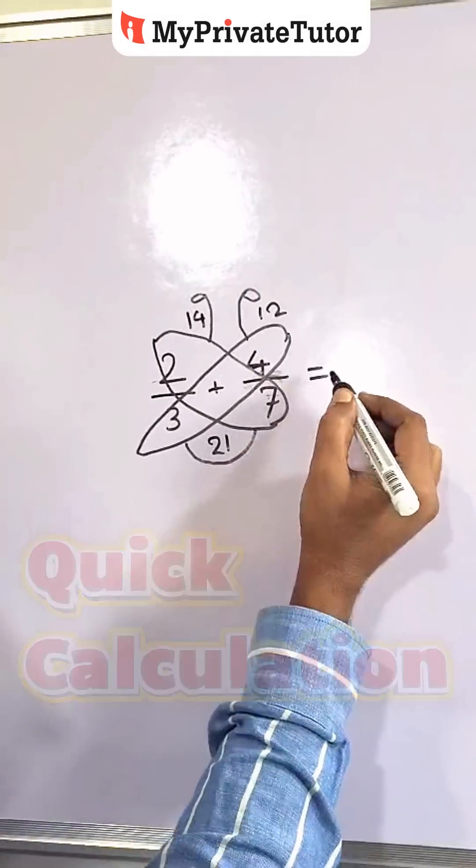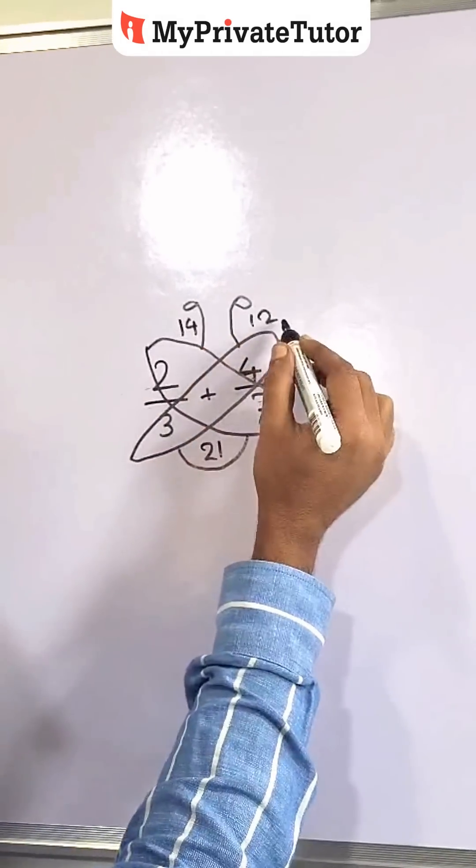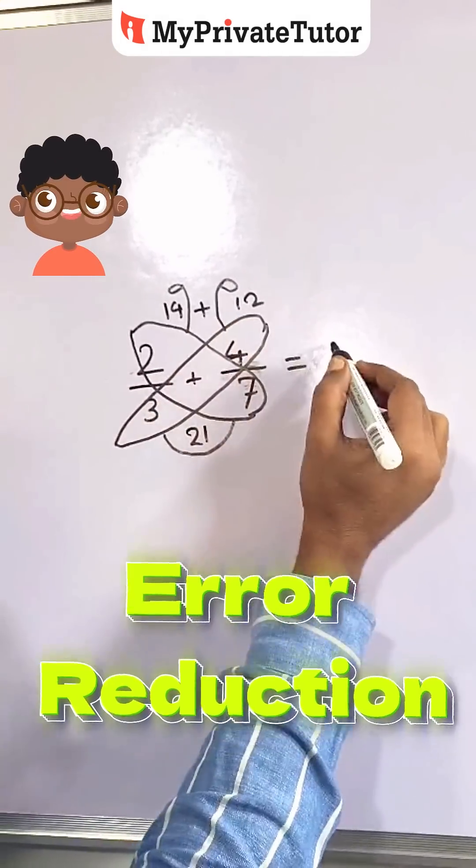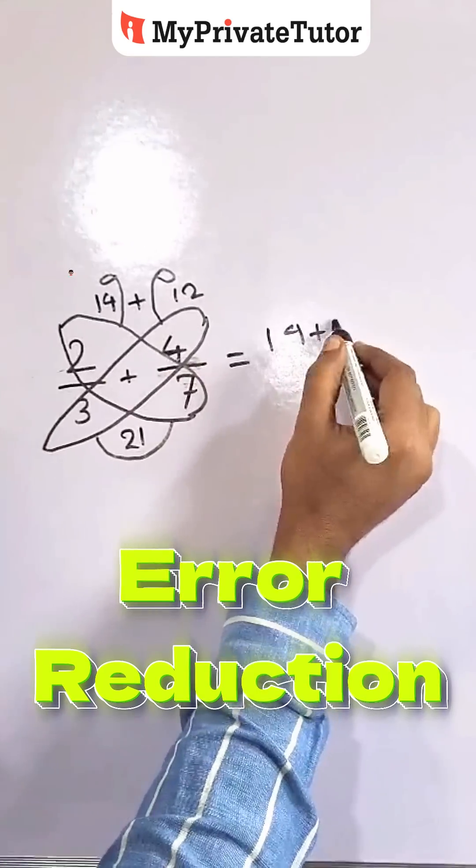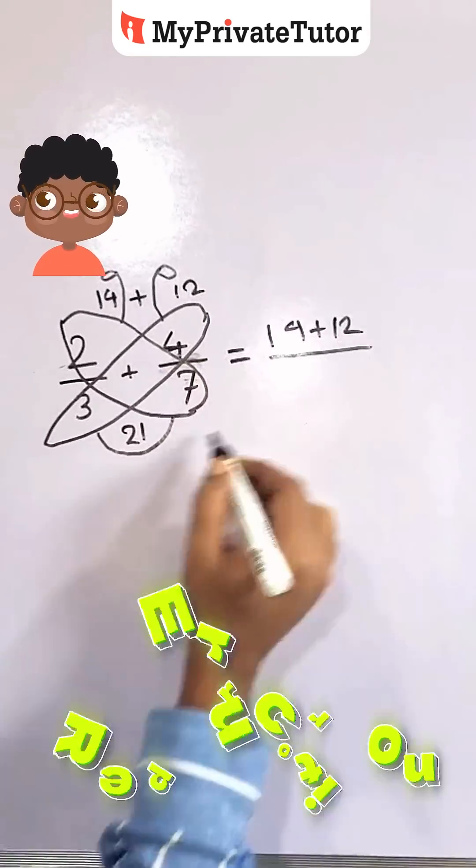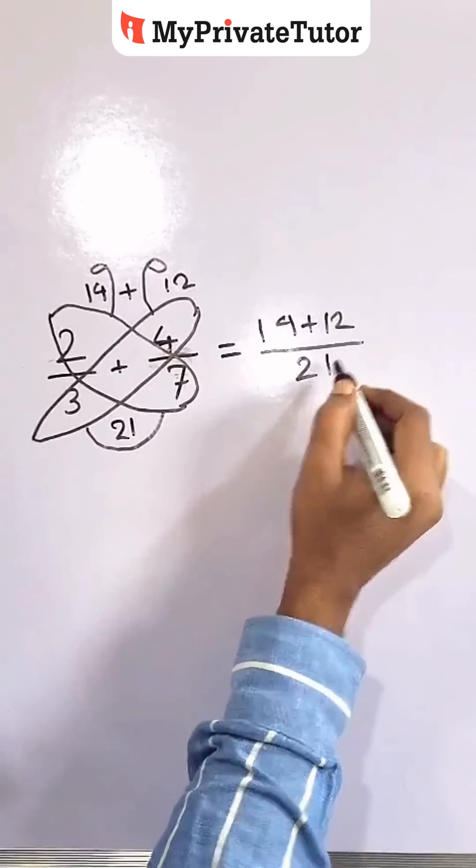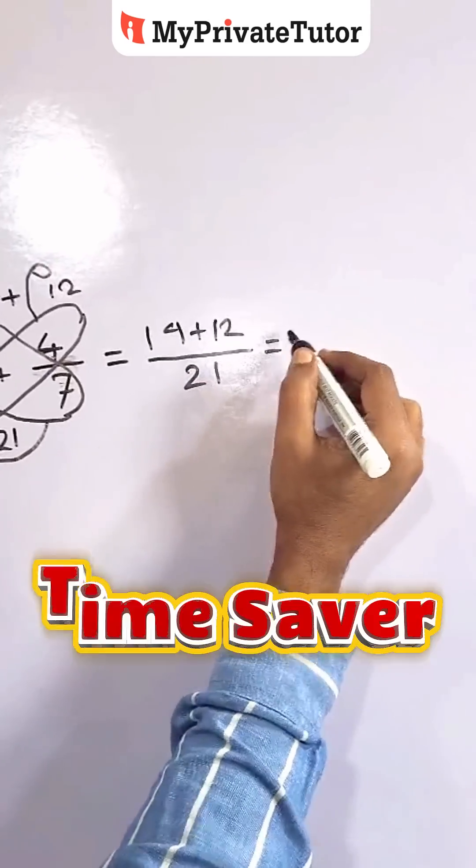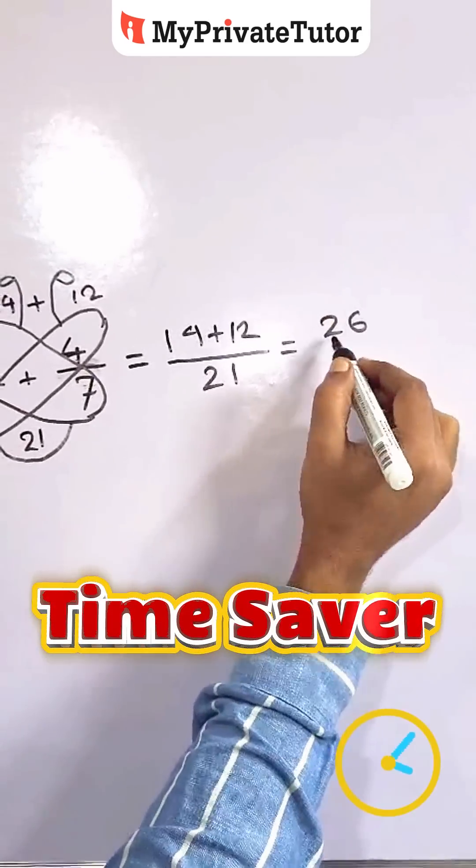Which is easy to do. Now add the two numbers which are in the antenna. 14 plus 12 divided by 21. So 14 plus 12 is 26 by 21.